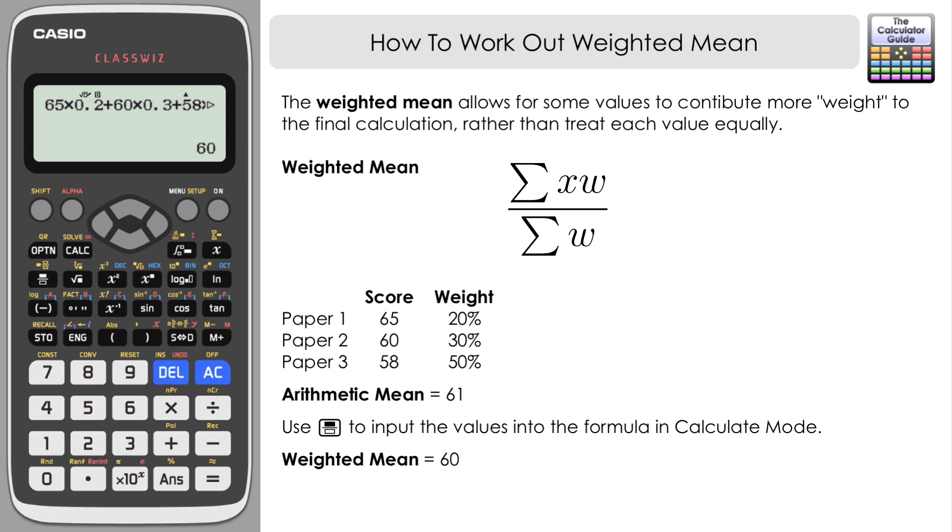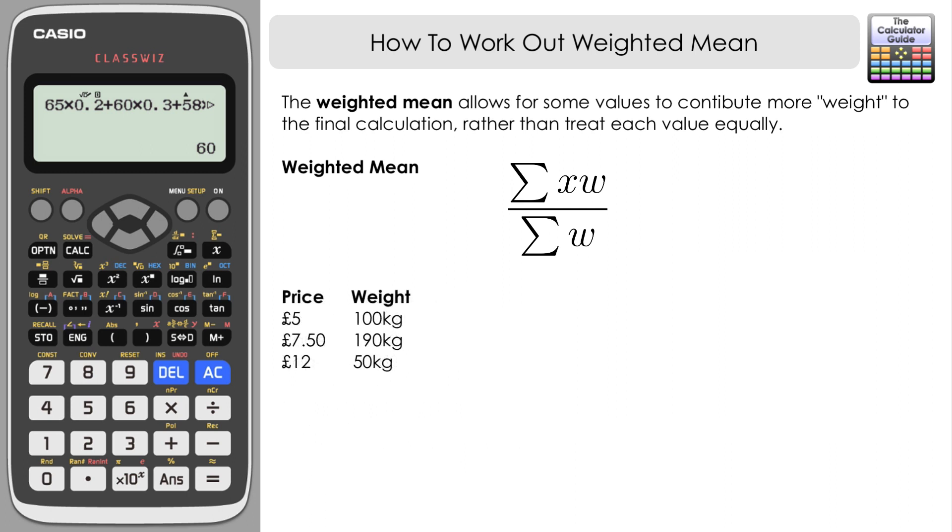Let's have a look at a second example. This time the weights aren't going to be a percentage, they're actually going to be actual weights. This could be a product that's being produced and sold in kilograms. If you worked in the retail industry it could be flour or sugar, maybe in the farming industry it could be a weight of seed. We can see here there's three different prices of the product that we can buy.